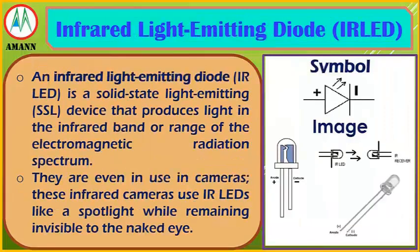Infrared light-emitting diode: a solid-state light-emitting device that produces light in the infrared band of the electromagnetic radiation spectrum. They are even in use in cameras — infrared cameras use IR LEDs like spotlights while remaining invisible to the naked eye.